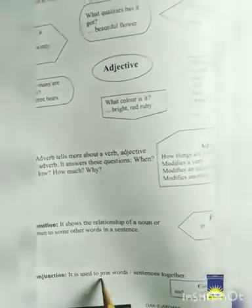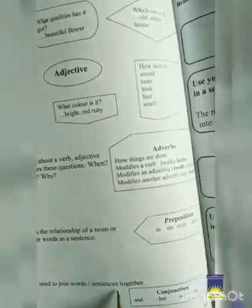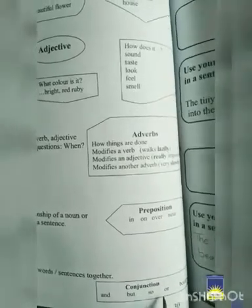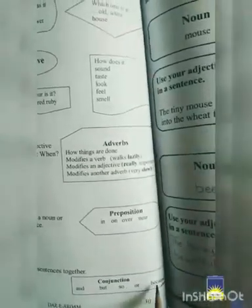Conjunction. It is used to join words, sentences together. Conjunctions are and, but, so, or, because.